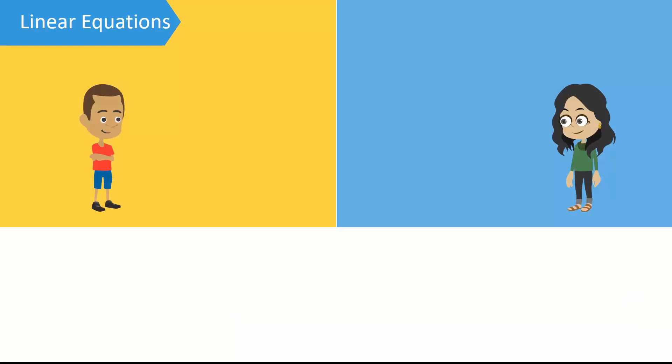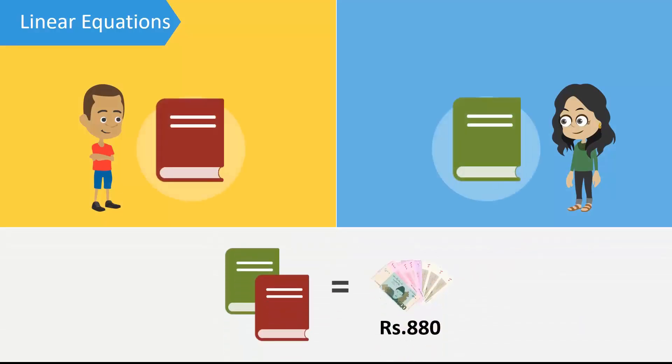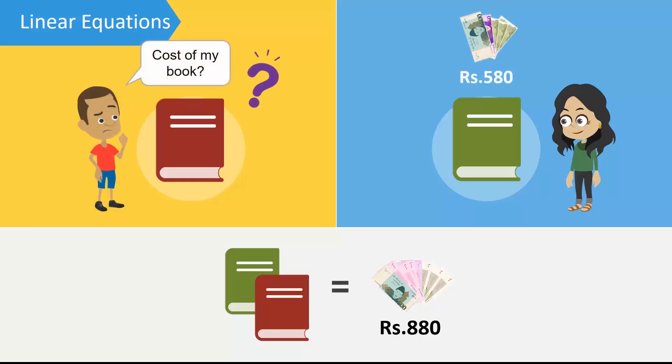Asif and Sara each bought a book and paid a total of rupees 880 for them. Sara remembers that the cost of her book was rupees 580 but Asif does not. Let's help Asif find the cost of his book using algebra.